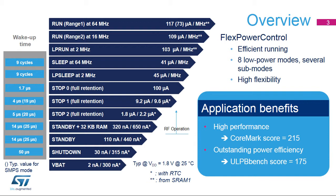STM32WB devices support eight main low power modes: low power run, sleep, low power sleep, stop zero, stop one, stop two, standby with RAM retention, and standby and shutdown modes. Each mode can be configured in many ways, providing several additional sub-modes. Note that for RF operation, the system cannot go below standby with RAM retention mode, as a minimum set of contexts needs to be maintained.